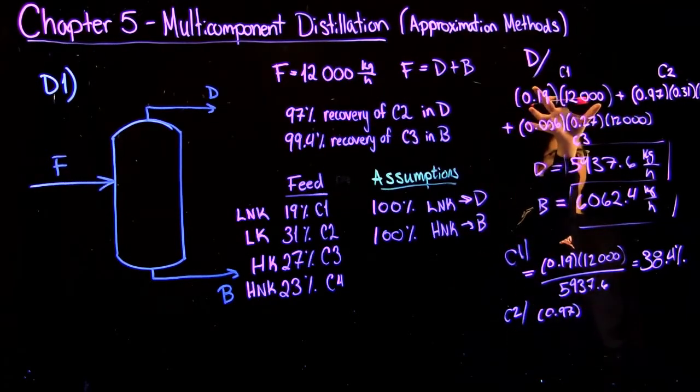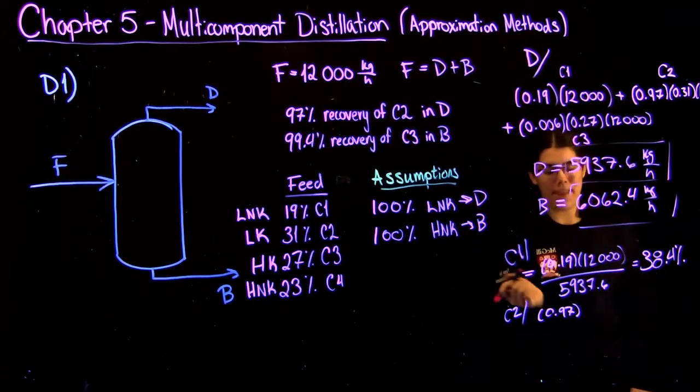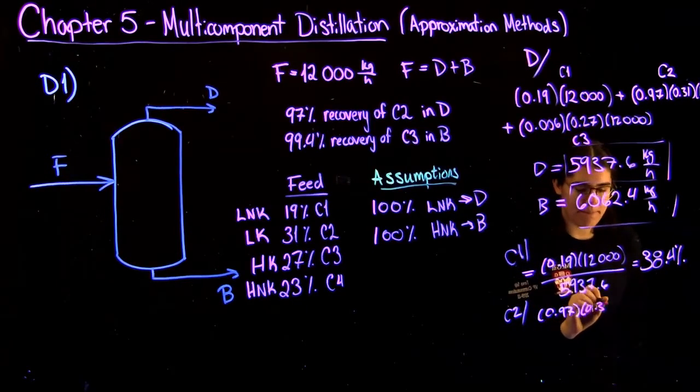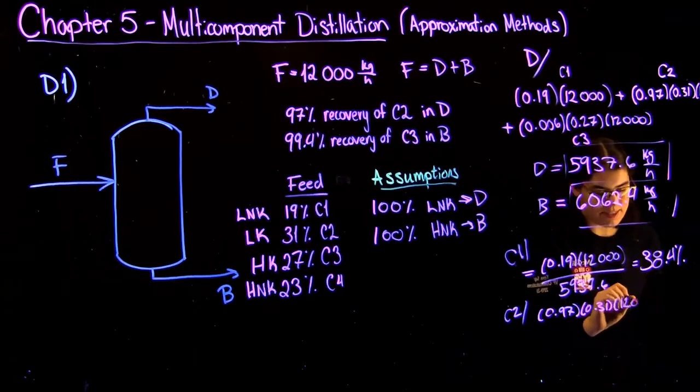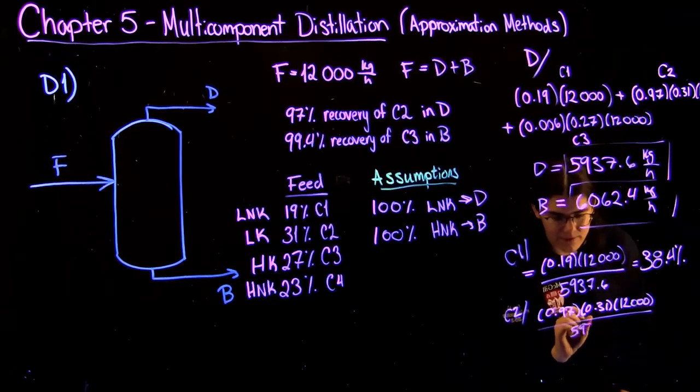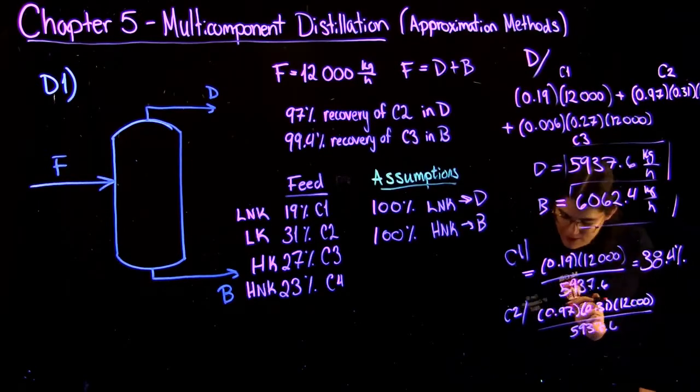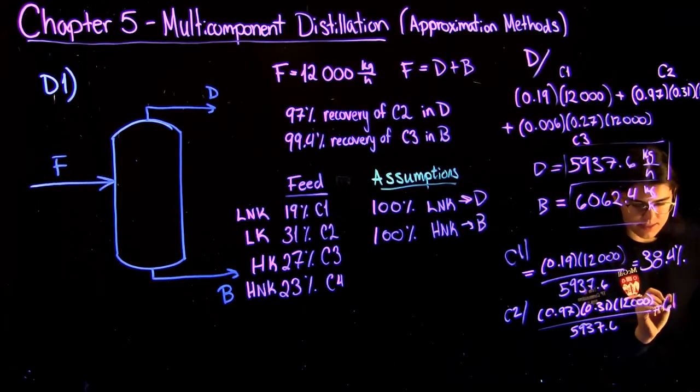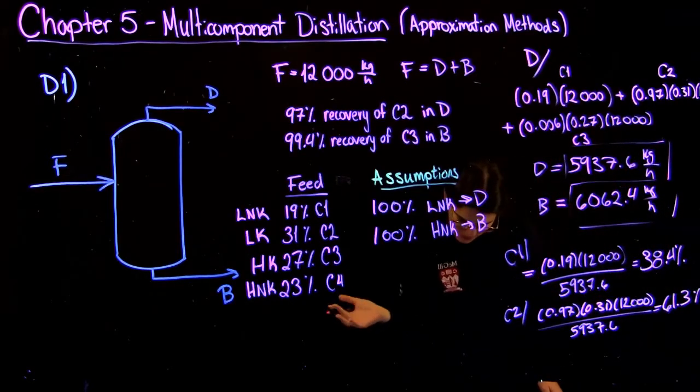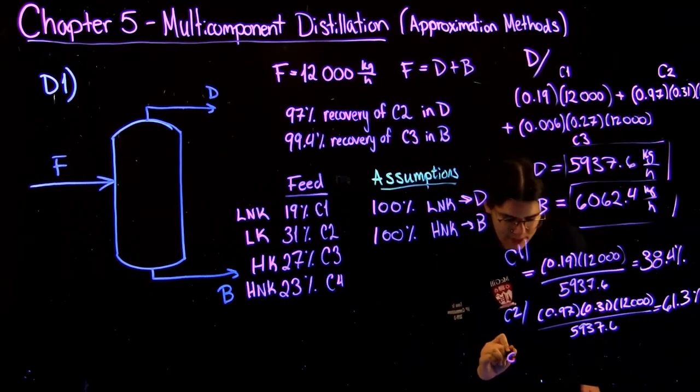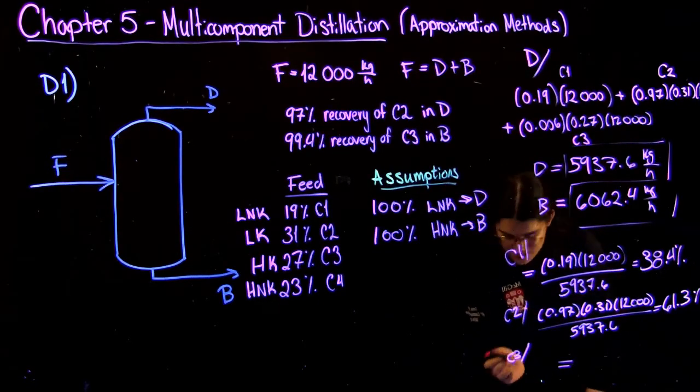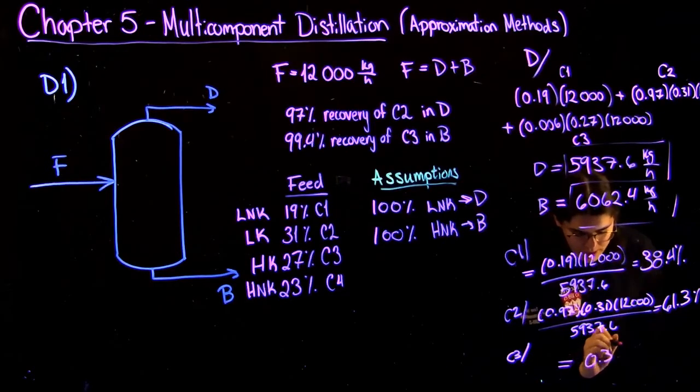5937.6. And then here you get 61.3%. And you can do the same thing for C3. This one I'm not going to show. I think you get the idea. You would get 0.3%.